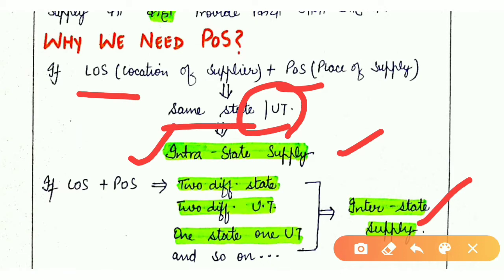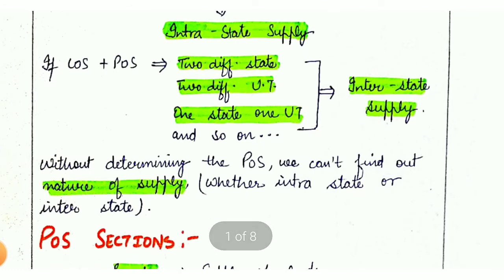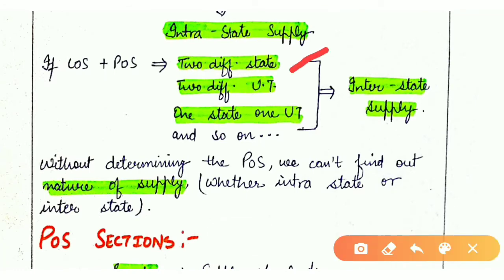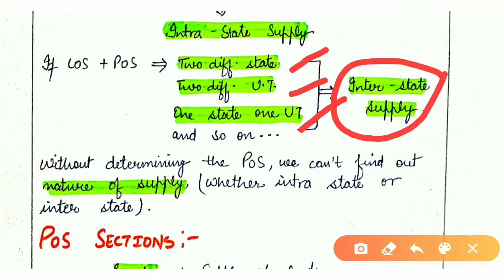When our LOS and POS are in the same state or same UT, we consider it intrastate supply — meaning supply within the state. When our LOS and POS are in two different states, two different UTs, or one state and one UT, we consider it interstate supply — meaning supply from one state to another. So it is clear that we need Place of Supply to determine whether our supply is interstate or intrastate.